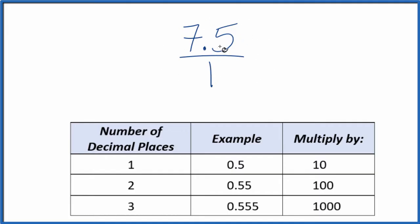We need to get this 7.5 to a whole number, so I have one decimal place. If I have one decimal place, I'm going to multiply by 10. That'll give me a whole number. So 10 times 7.5, that ends up equaling 75.